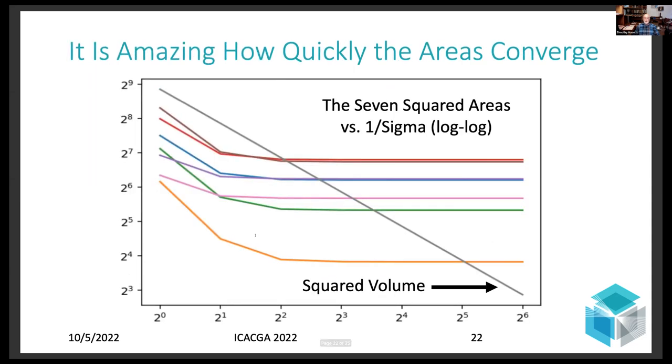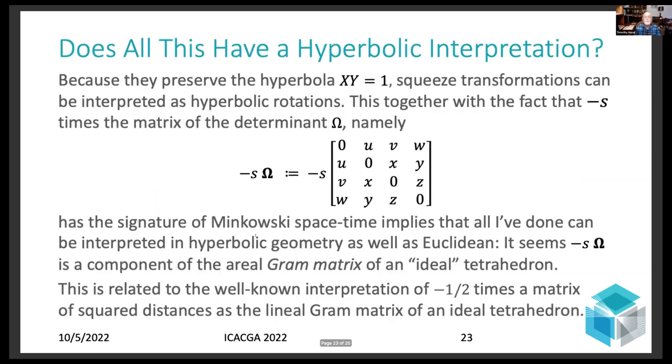So asymptotically, the areas are preserved by such transformations. And in fact, you can show here that as you let that parameter sigma, one over sigma is plotted down here on the x-axis on the log scale. The areas of the faces, seven faces are plotted here. And you can see that it converges very fast to well-defined values. And in this way, you generate one of the zeros of my formula, my extension of Heron's formula for tetrahedra. And this is my last real slide.